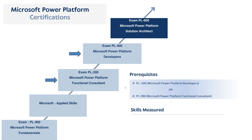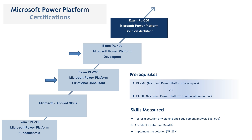As a candidate for PL-600, you should have solution architecture experience across functional and technical disciplines of Microsoft Power Platform. The skills required include performing solution envisioning and requirement analysis, architecting solutions, and implementing them. You should be able to facilitate design decisions based on best practices across development, configuration, integration, infrastructure, security, licensing, storage, and change management. In short, this role requires you to architect and ensure successful implementation of end-to-end solutions.